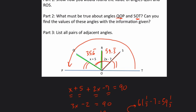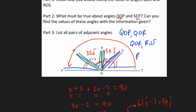List all pairs of adjacent angles. Adjacent angles are angles that are next to each other. So QOP right here is next to QOR. So QOP and QOR. Then QOR and ROS. And finally, ROS again and SOT. So adjacent angles are angles that basically share a leg, and they don't overlap or anything. So those are all adjacent angles.